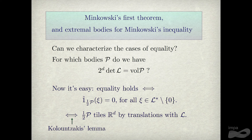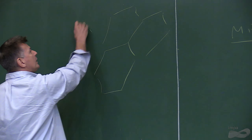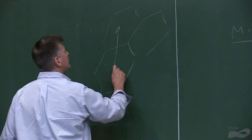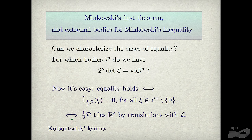This gives a very nice dictionary: tiling with a convex body by translations with a lattice L corresponds to vanishing of the Fourier transform in the dual space. For example, symmetric hexagons tiling by translations tiles if and only if the Fourier transform of the body vanishes on the dual lattice. A lot of my current research circles around what geometric information you can gain from the zero set of the Fourier transform.